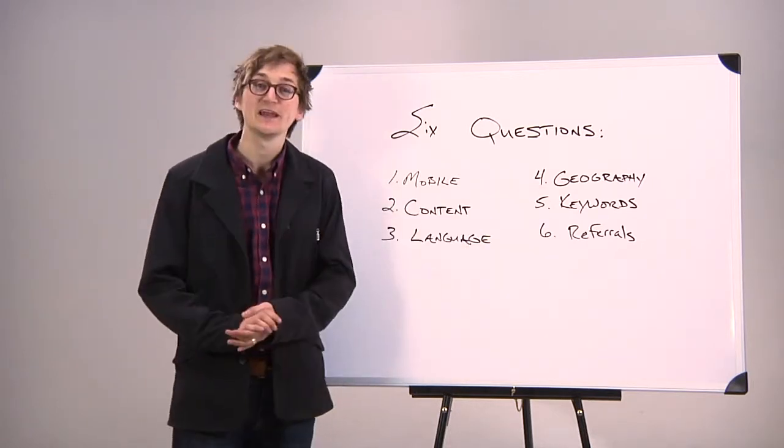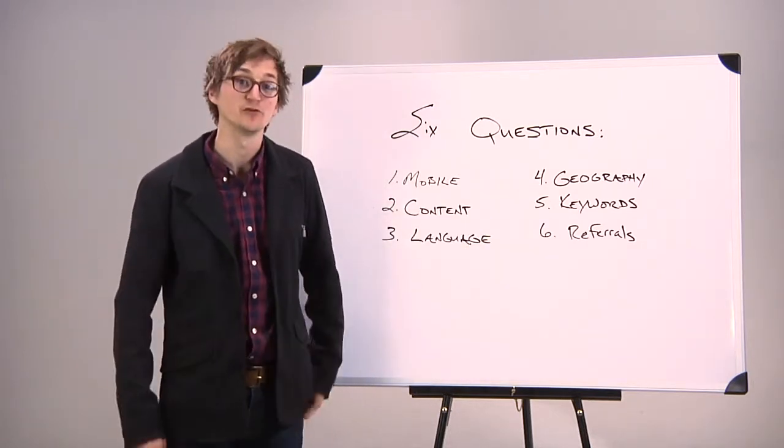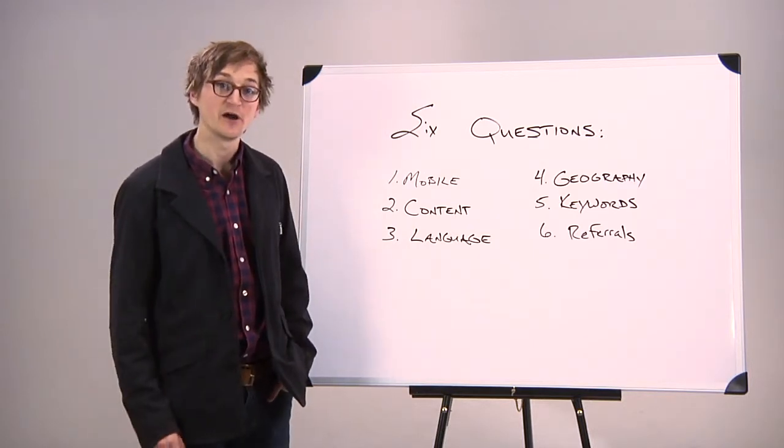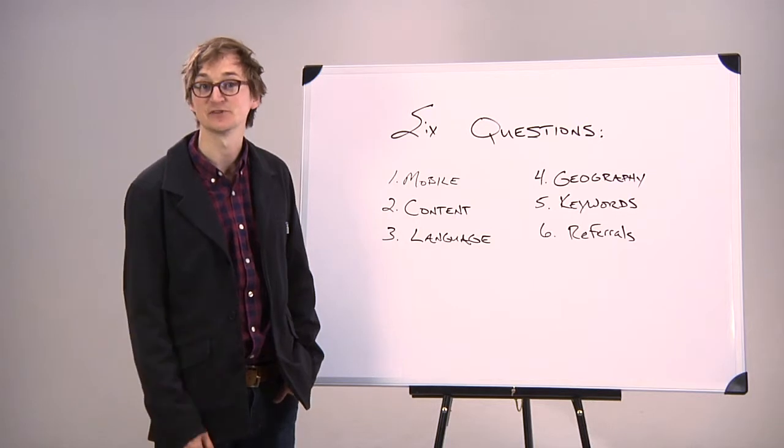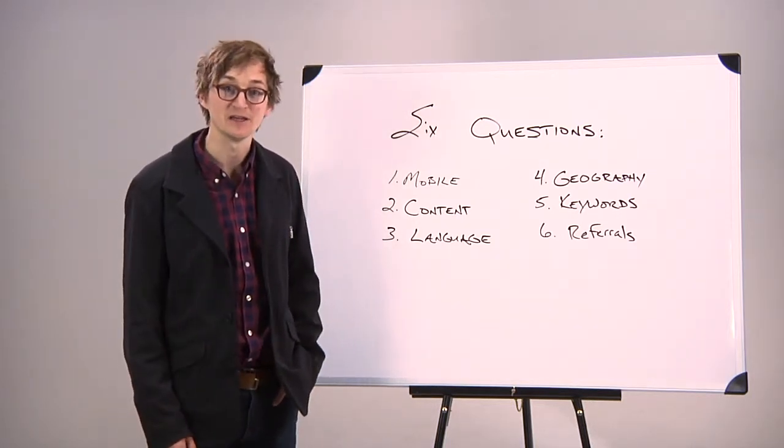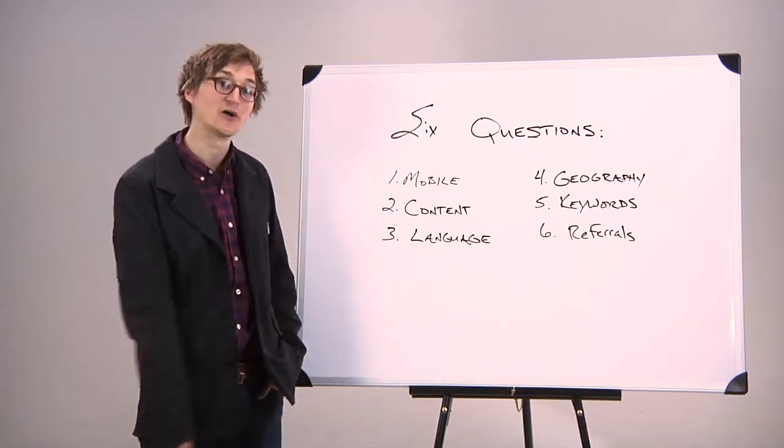The fourth question you should be looking at is geography. Where are people coming from? This will give you really nice insights into if your traditional media is working. Are you seeing increased traffic and leads from a certain community? If so, maybe keep doing that traditional media in that market. The geography is going to give you some nice ROI numbers.